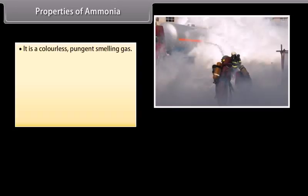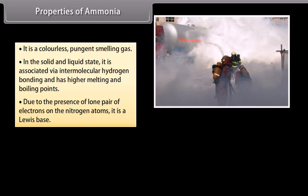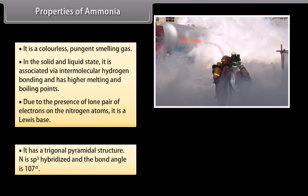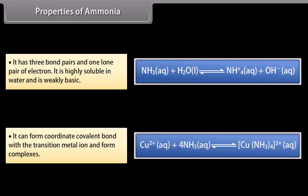Ammonia is a colorless, pungent-smelling gas. In solid and liquid state, it is associated via intermolecular hydrogen bonding and has higher melting and boiling points. Due to the lone pair of electrons on nitrogen, it is a Lewis base. It has a trigonal pyramidal structure; nitrogen is sp3 hybridized with a bond angle of 107 degrees. It has three bond pairs and one lone pair, is highly soluble in water, weakly basic, and can form coordinate covalent bonds with transition metal ions to form complexes.